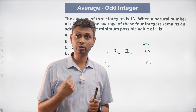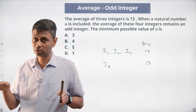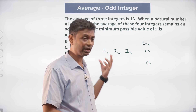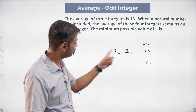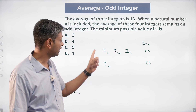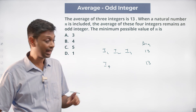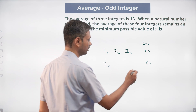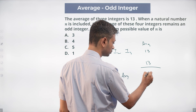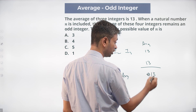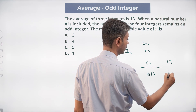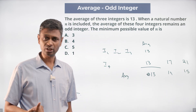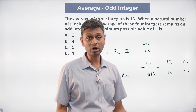The excess brought in by the fourth number must be equally distributable across all four numbers. Whatever I4 brings above 13 gets distributed across all four. So I4 could bring 4 more than 13 — if I4 brings 13, average stays 13; if I4 brings 17, average becomes 14; if I4 brings 21, average becomes 15.